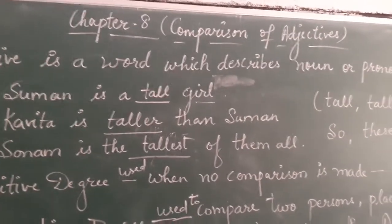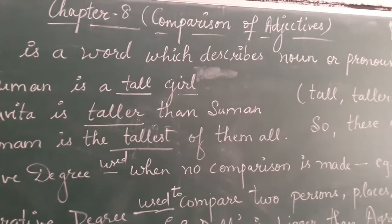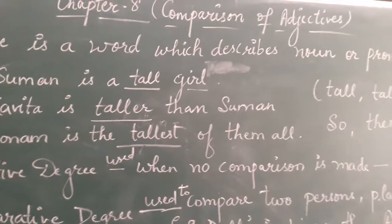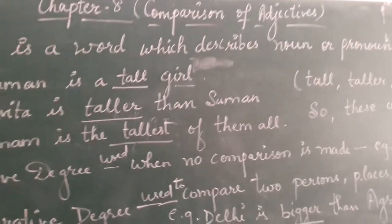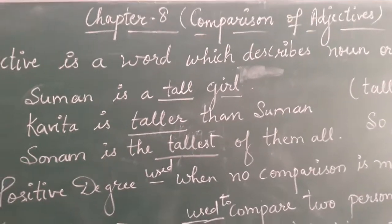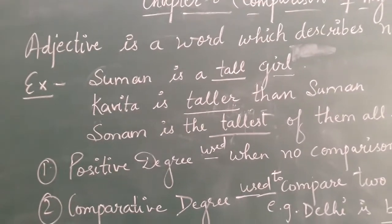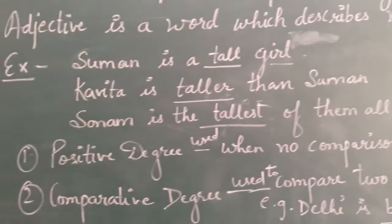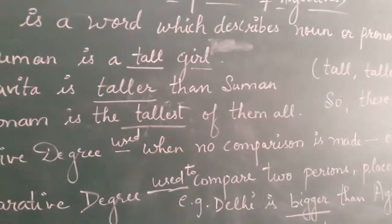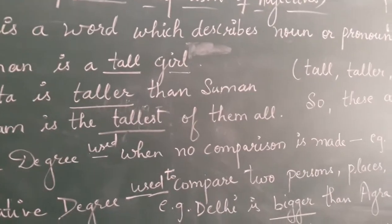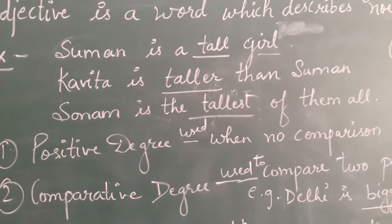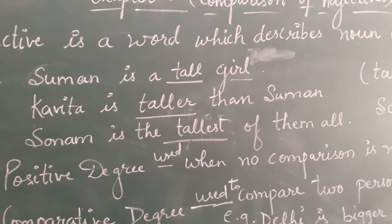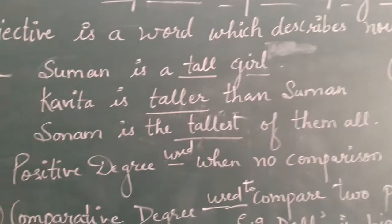Dear students, I am going to explain chapter number 8 of English Grammar and the name of the chapter is Comparison of Adjectives. Before starting this chapter, let me know how many of you know the meaning of adjective. An adjective is a word which describes a noun or pronoun. Now let us take some examples to understand the chapter Comparison of Adjectives.